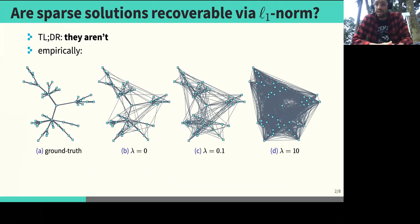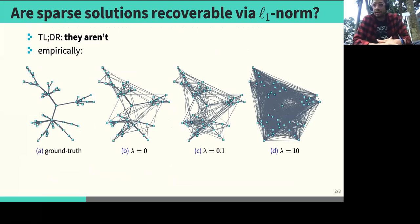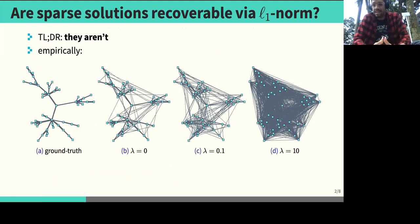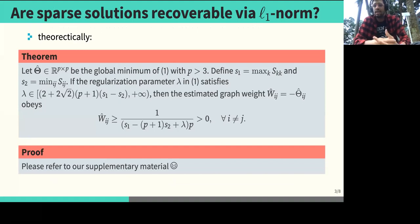Surprisingly, the L1 norm is unable to recover sparse graphical representations on the Laplacian Structured Graphical Model. To see that, we set up a simple experiment where we have a ground truth graph, generate data from that graph, and try to recover the underlying graph for different values of lambda. What we observe is that as lambda increases the learned graph gets denser and denser, which is the opposite of what we want. Theoretically, we state a theorem here which basically says that for a large value of lambda the graph is going to be fully connected.